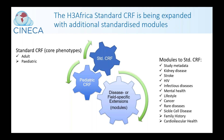The H3Africa standard CRF is being expanded with additional standardized modules. Along with core phenotypes for adult data, a pediatric core phenotypes module is being built. Within the joint phenotype harmonization project, modules are being developed to address overlap in H3Africa data collection where projects were collecting heterogeneous phenotype data in specialized fields. These modules cover study metadata, kidney disease, stroke, HIV, infectious diseases, mental health, lifestyle, cancer, rare diseases, sickle cell disease, and cardiovascular health.